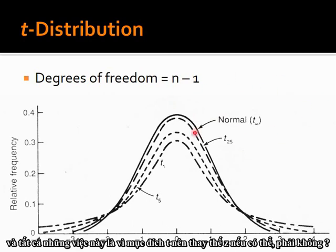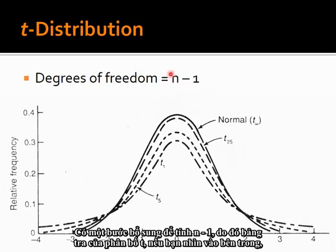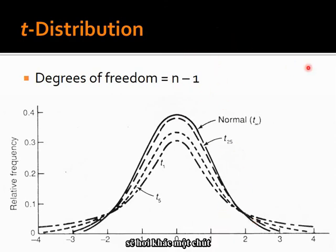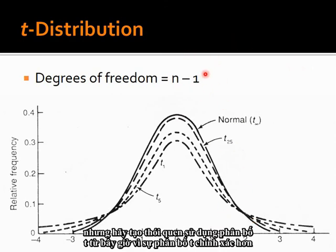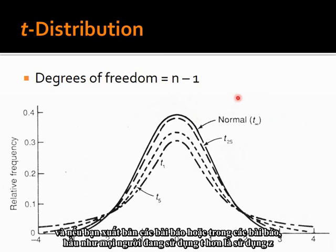Because the only difference with the T-distribution is adding in this extra accountability for degrees of freedom — considering whether s is a reliable estimate of sigma — for all intents and purposes, T should replace Z as far as you can. It's an extra step to calculate n minus 1. Make it a habit to use the T-distribution from now on; it is the more accurate distribution. If you publish papers or read journal papers, almost everyone is using T rather than Z.